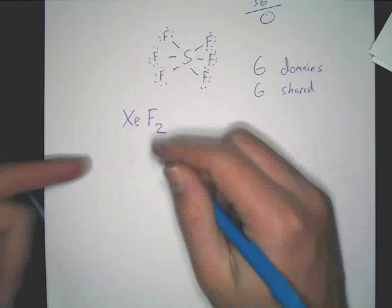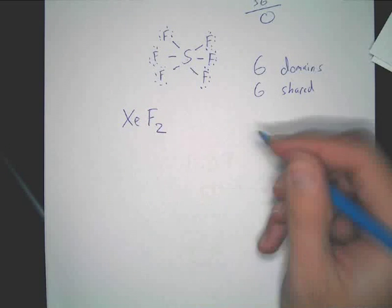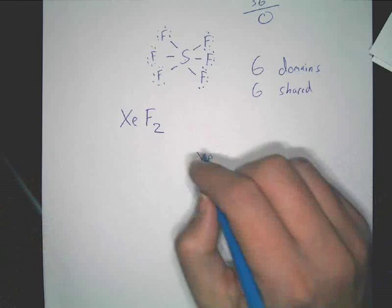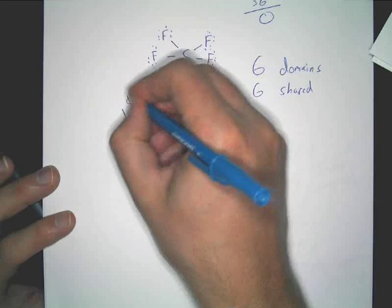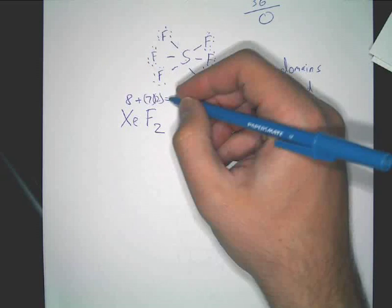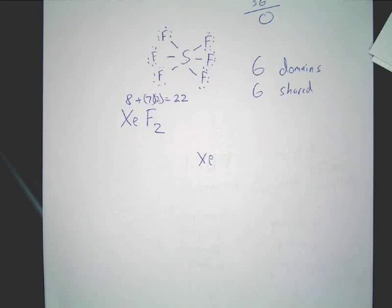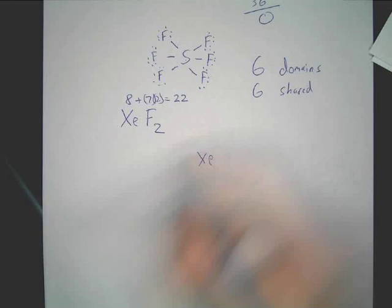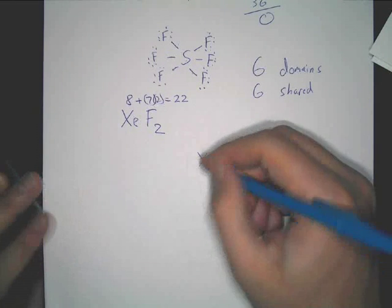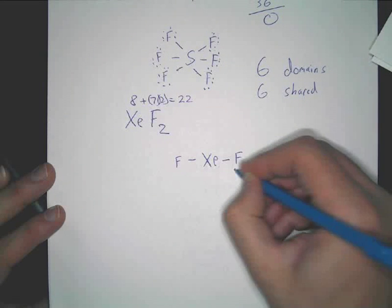So what we've got to look at here is say, well, central atom, what is it? Xenon. Xenon. What is that, 22? Yeah. So you've got 22. Now, just do what you always do. Connect them. Fill in your electrons around fluorine.